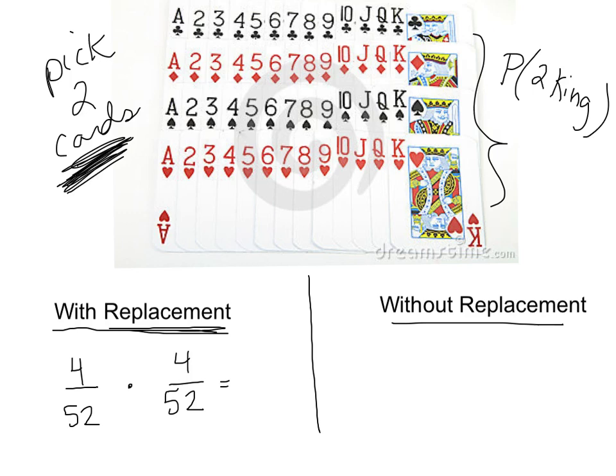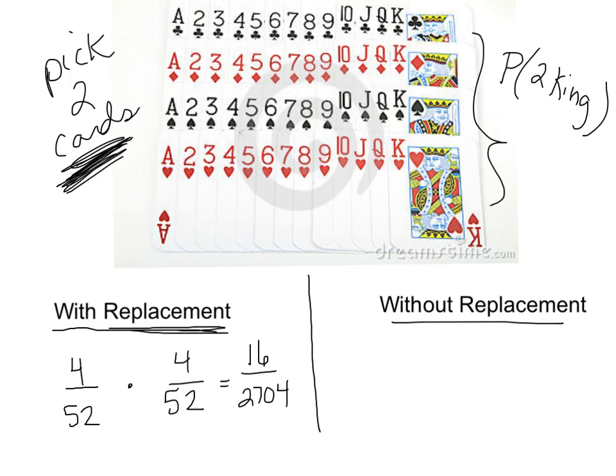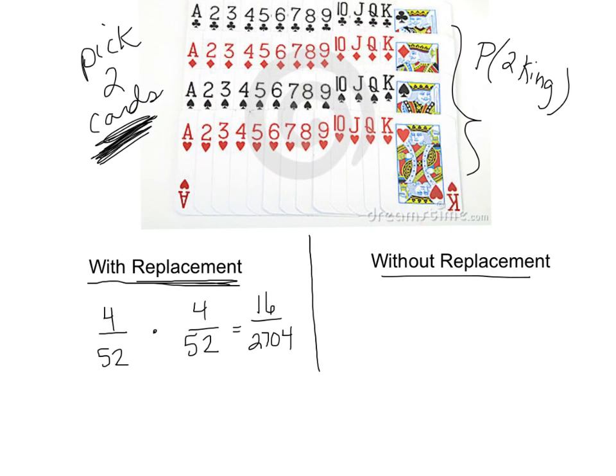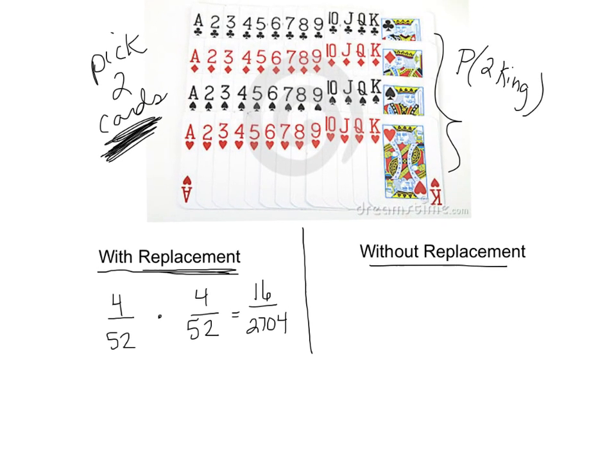Whenever you are doing two events, similar to the fundamental counting principle, the probability of both of those things happening—you get a king on the first one and the second one—you multiply the probabilities together. When you multiply fractions, you multiply straight across. I get 16 over 2704. You're going to do that in your calculators. 16 divided by 2704 in your calculator gives you 0.0059. We're going to go to four decimal places with these.